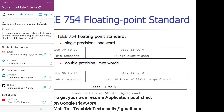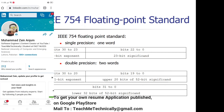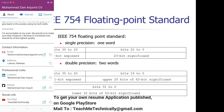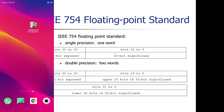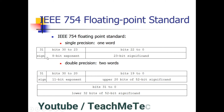Before moving forward, we need to know that there are two different standards for representing a floating point number: number one is single precision and number two is double precision. In single precision we have 32 bits, and in double precision we have 64 bits. In single precision, the most significant bit is the sign bit, the next 8 bits are reserved for the exponent, and the remaining 23 bits are for the significand.